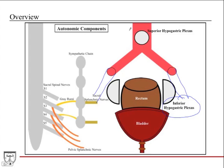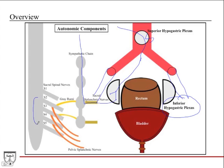The sympathetic fibers can either come through the superior hypogastric — they can either synapse there or keep traveling down and synapse in the inferior hypogastric — or they can come down through the sympathetic chain and travel out through the sacral splanchnic nerves to reach the inferior hypogastric plexus. The parasympathetic fibers originate in the S2 through S4 region of the spinal cord and come out traveling through the pelvic splanchnic nerves, making their way up to the inferior hypogastric plexus.